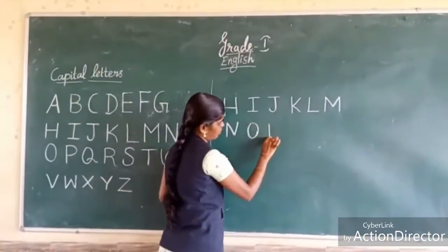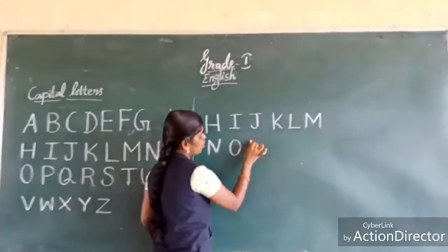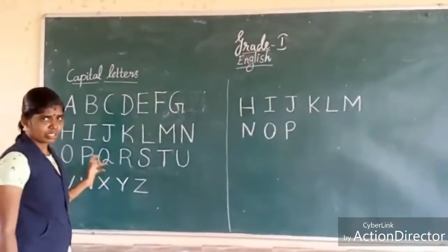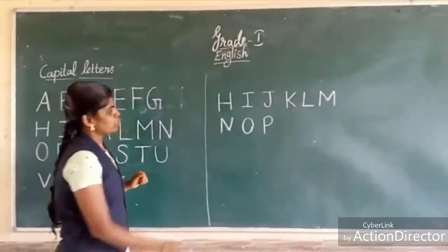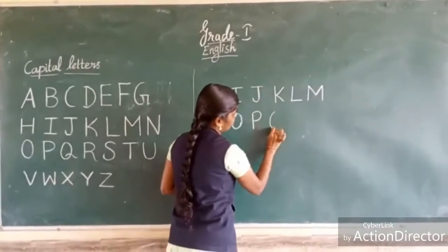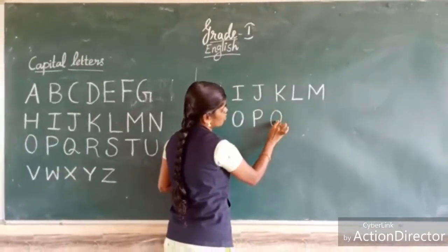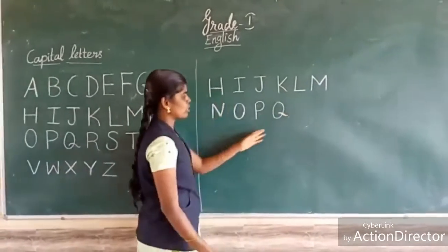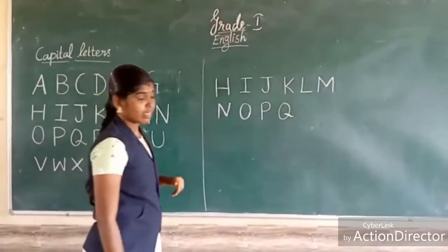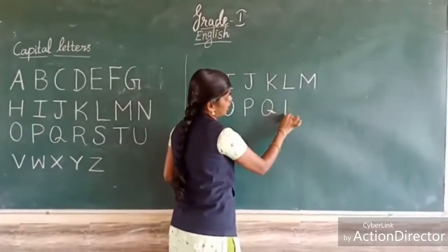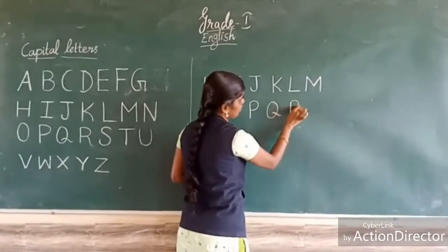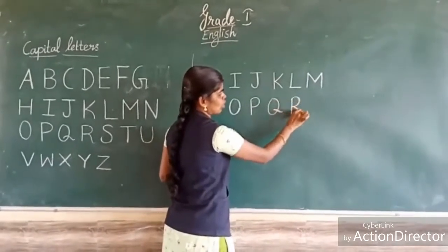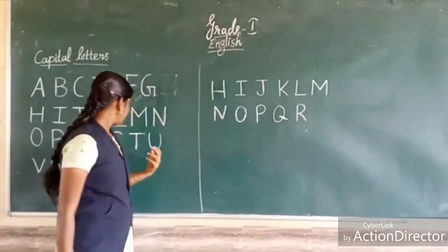Next, P. How do I write P? One standing line and a curve on the upper right. This is P. Next, Q. Q looks like O — first write O, then add a small cross line at the bottom right. This is Q.